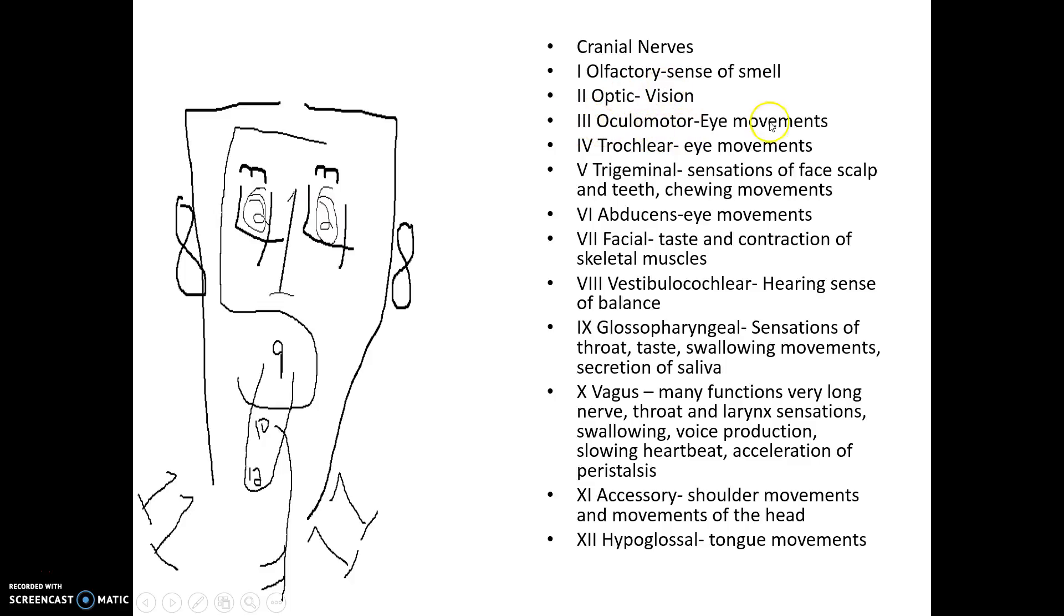Number 3, oculomotor eye movement, so it's still in the eye region. I'm making little eyebrows. We have two little 3s here showing that that is oculomotor or eye movements. Number 4, trochlear or eye movements. We also made some little glasses around number 2 and near number 3. These also help us control some of the muscles in our eyes.